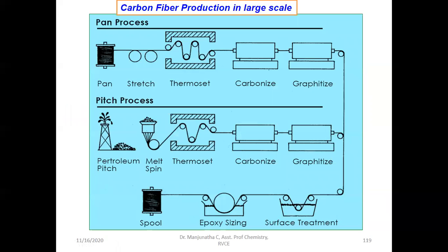In the large-scale manufacturing process, here is the flow chart of steps involved. Carbon fiber can be prepared using PAN (polyacrylonitrile polymer) or petroleum pitch as precursor — only the precursor differs but the steps are the same. First, the PAN polymer is subjected to oxidative stabilization at 200 to 300 degrees centigrade in the presence of oxygen. The plastic PAN is converted to non-plastic because of cyclization, where the nitrile groups start forming hexagonal rings.